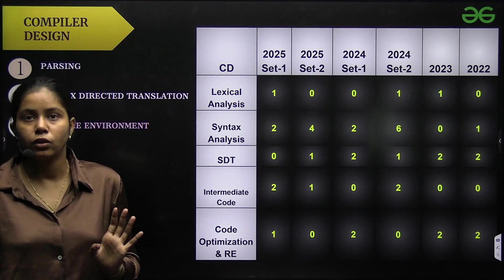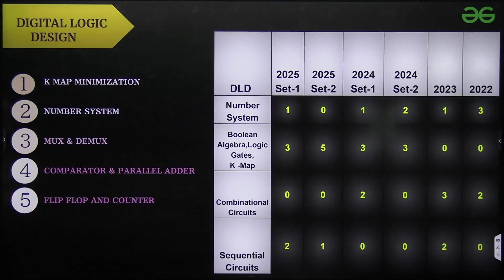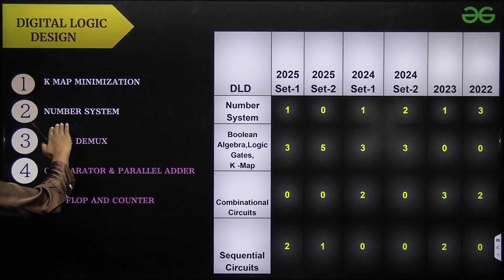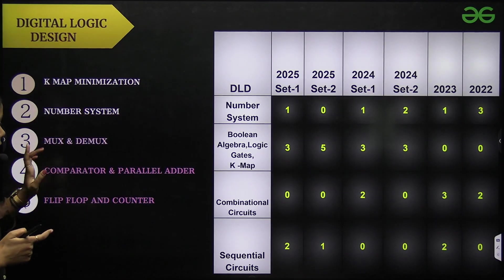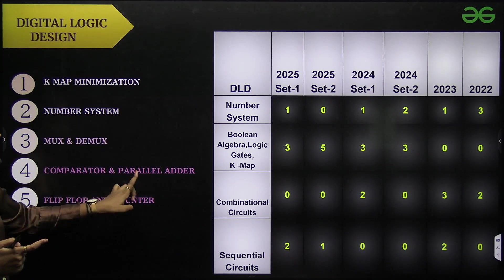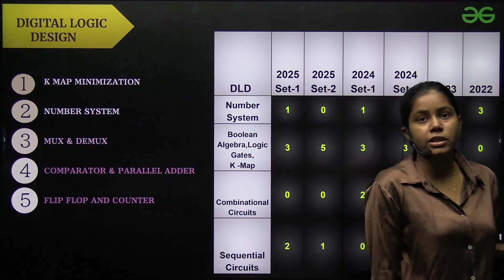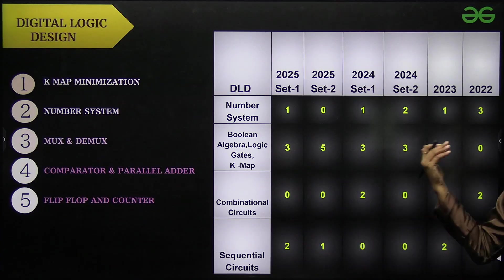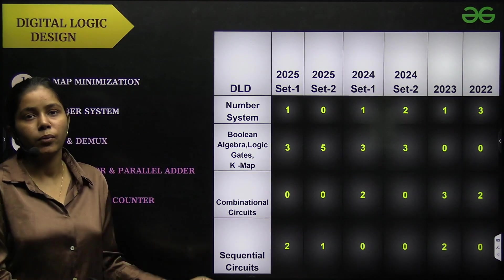Next I have is digital logic. In digital logic we have important topics that is K-map minimization, number system, MUX and DEMUX, comparator and parallel adder, and flip-flop and counter. And again there are all the weightages given for the past four years. So all these data is important when you are